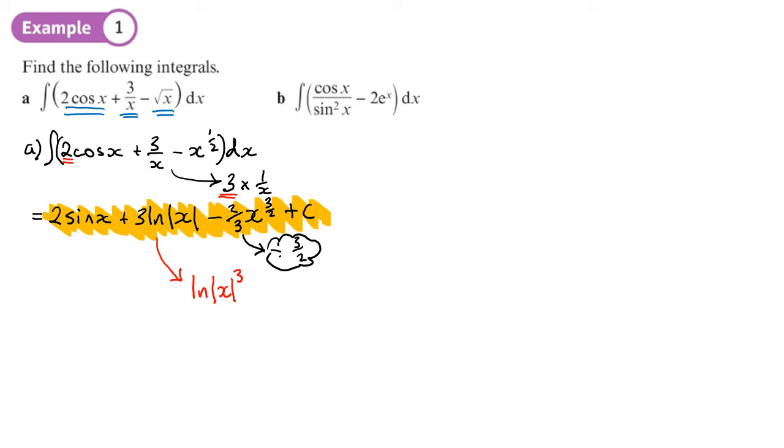In part b we've got cos over sin squared. Now what we want to do with that is say, can that be simplified into a different trig identity? Because cos over sin squared, basically that's the same as cos x over sin x times by 1 over sin x, minus 2e to the x dx. So all I've done is write that there in a slightly different form. Now cos over sin, that's cot, and 1 over sin is cosec, so you've got cot x cosec x.